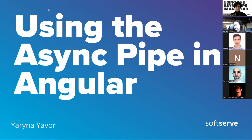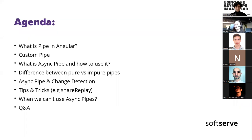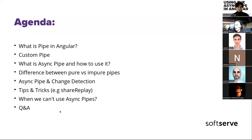The topic I chose is about async pipe in Angular, but I will also talk about what exactly a pipe is in Angular. We'll cover custom pipes, how to use async pipe in some cases, the difference between pure and impure pipes, async pipe and change detection, some tips and tricks including shareReplay from RxJS, and when we can't use async pipes.